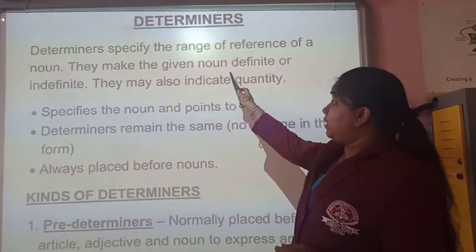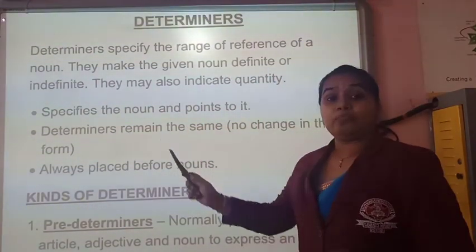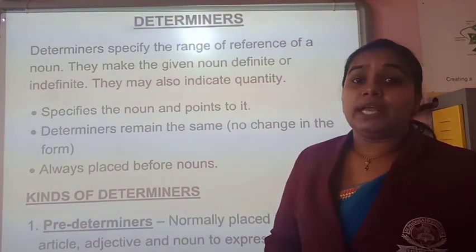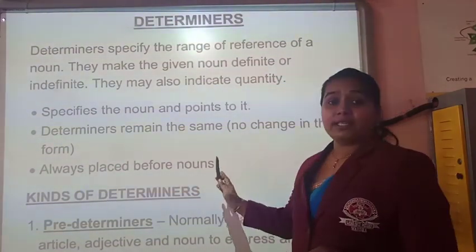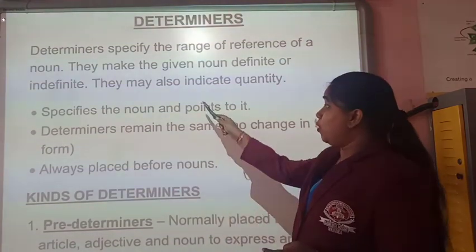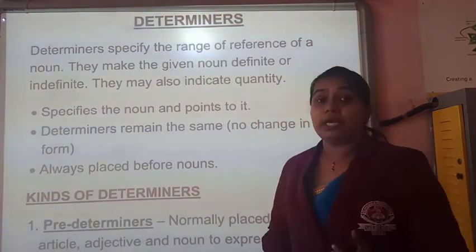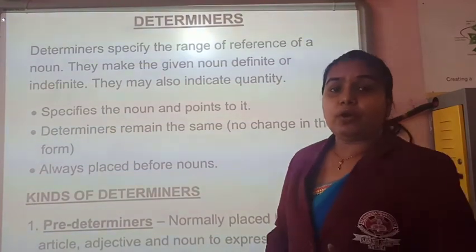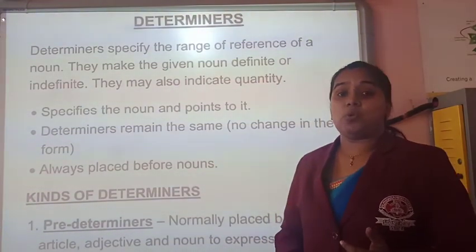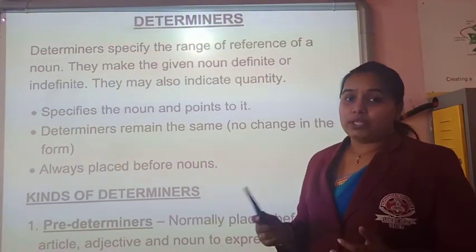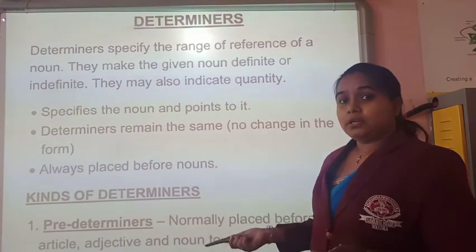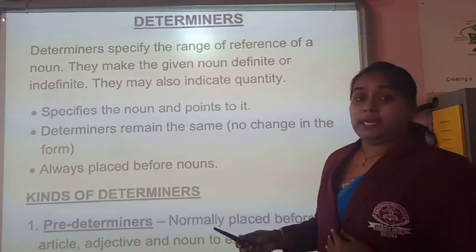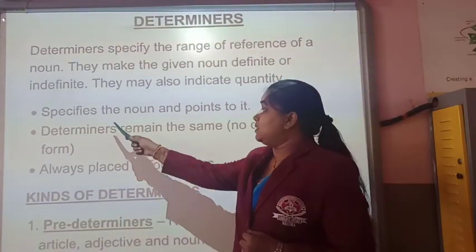Determiners make the given noun definite or indefinite. Definite means the particular one; indefinite means the generalizing or common one. They also indicate the quantity — the amount and quantity in numbers as well as in terms of amount. Now let us read the characteristics of determiners.